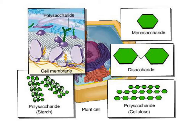Carbohydrates are the most abundant compounds found in nature. Starch in plants and glycogen in animals are carbohydrates serving as storage forms of glucose. They are also called saccharides, and they can be classified as monosaccharides when there is only one unit, disaccharides, or polysaccharides.